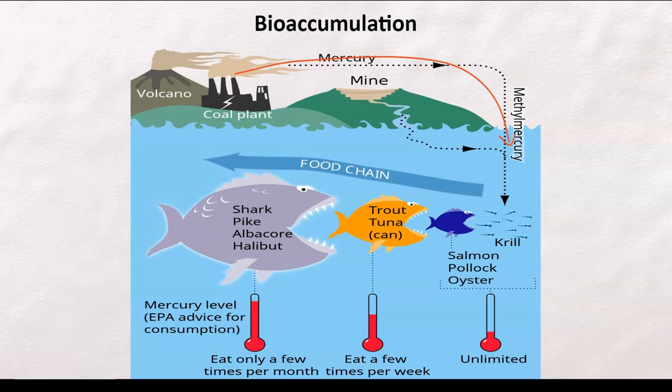So this is why we can eat unlimited amounts of salmon, pollock, oyster, and krill, because the methylmercury content is not enough for it to harm us. And then trout, tuna, we can't eat it as much because its methylmercury content is a lot higher. And shark, pike, albacore, halibut is actually only recommended to eat only a few times a month because EPA advises for consumption only a few times a month due to its mercury level.